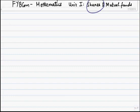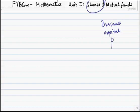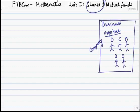Welcome back. Today we are going to do our shares topic from Mathematics, Section Unit 1. Whenever anybody wants to start a business, a huge amount of capital — that is, money — is required. An individual who would like to start a large-scale business may not be able to raise that much capital. So what happens is a group of like-minded people come together and form a company. The people who establish this company are called promoters.